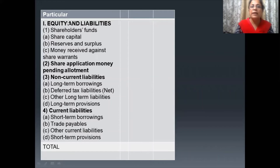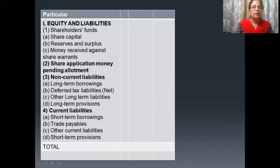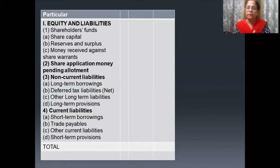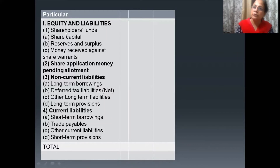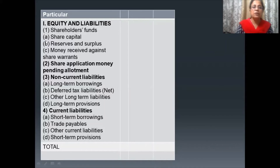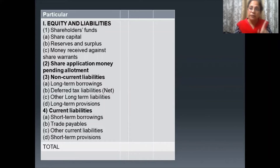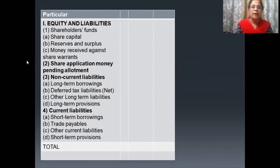In the format of the balance sheet, first comes 'Equity and Liabilities,' written as Roman numeral I. Equity basically represents the liability towards the shareholders — that is why it is known as Equity. Under Equity and Liabilities, the first point is Shareholders' Fund. In Shareholders' Fund, we include Share Capital — equity shares and preference shares, and the total of equity and preference shares.